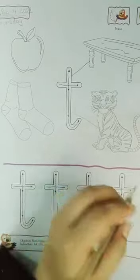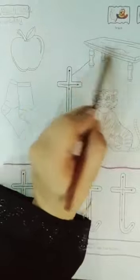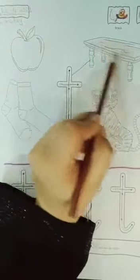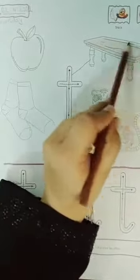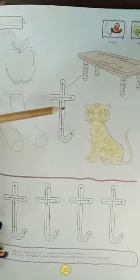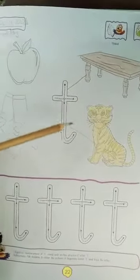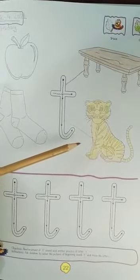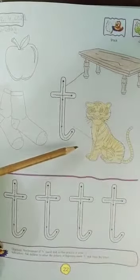Now I will color the table brown. The table color is brown. I have colored the table dark brown and in the tiger I have colored it light brown. Now students, you have to complete your work and send me. Allah Hafiz.